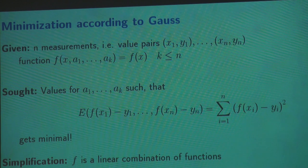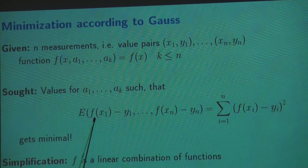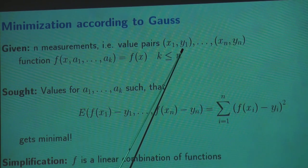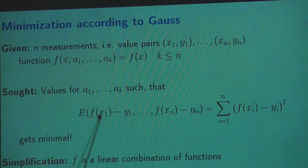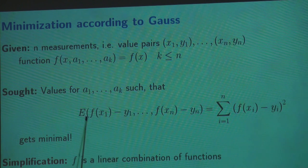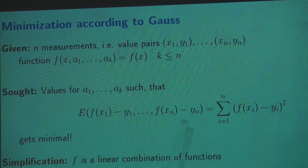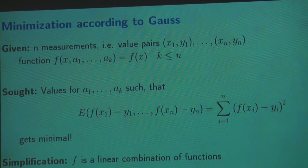We weaken our requirement: we only want the error to be as small as possible. This error is capital E — f(x1) minus y1, where y1 is the y-component of the first given point, and f(x1) is the value of our function at that point. If they are not equal, this is non-zero. We have this difference for all n data points. The error is the sum of all the squares of the differences.